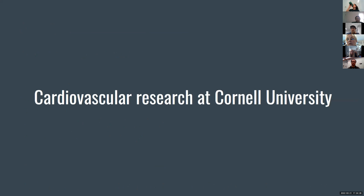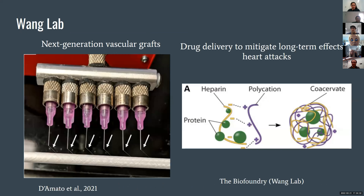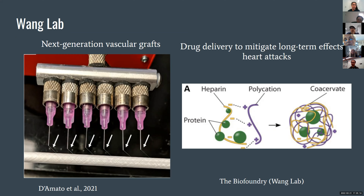Now I'll go through some of the cardiovascular research at Cornell University. In the Wong Lab, we're working on the next generation of vascular grafts. As was discussed with coronary artery bypass, you need to take a vessel from another part of the body, but they may not always be available — so synthetic grafts would be used instead. In the Wong Lab, we're working on grafts that better match the mechanical properties of your native vessels and can potentially degrade over time and be replaced with your own tissue to provide a repaired vessel. Others in this lab are also working on drug delivery to help the heart regenerate after a heart attack, using unique drug loading methods to make sure these drugs last longer in the body.